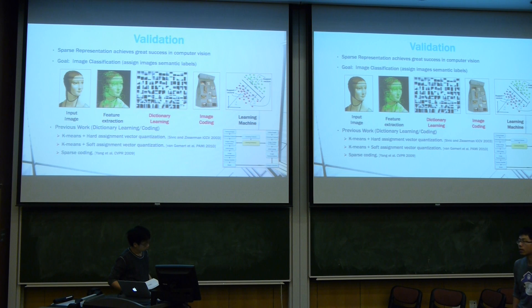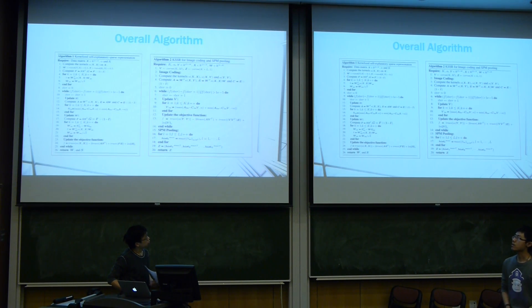Now, we want to validate our proposed algorithm. We introduce it to a successful application of sparse representation in the region, image classification. Generally speaking, this is based on the bag-of-words framework and Yang's work in sparse coding. We introduce the kernel into the dictionary learning and learn sparse code for SPM pooling. When we gather all this together, we get our own algorithm, as shown in the chart.